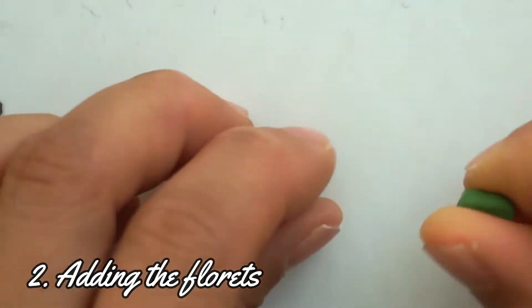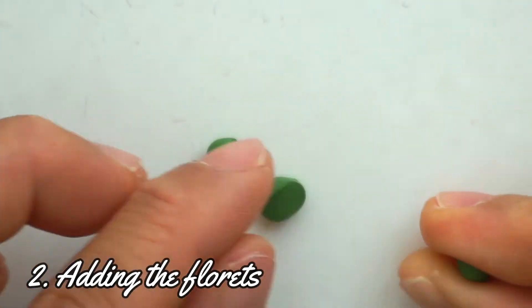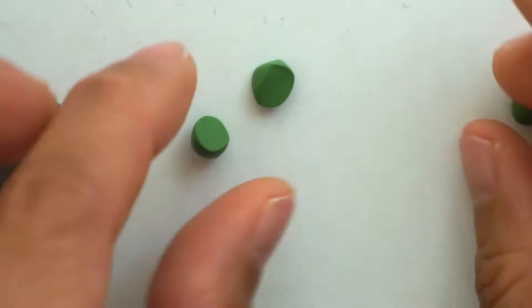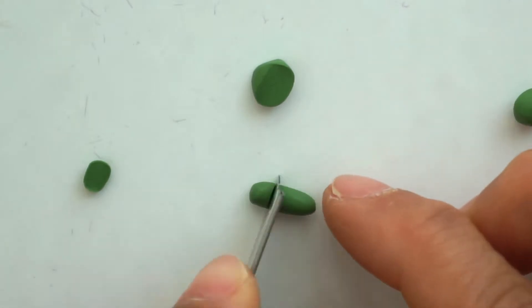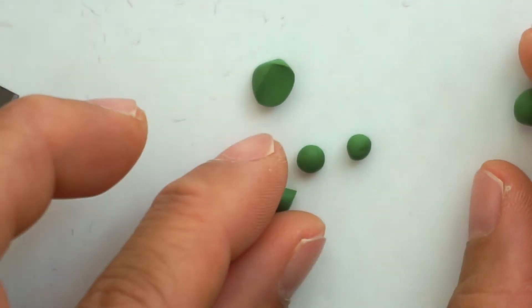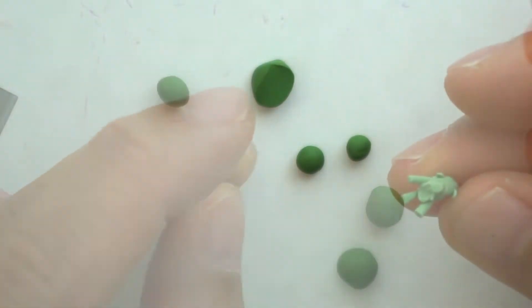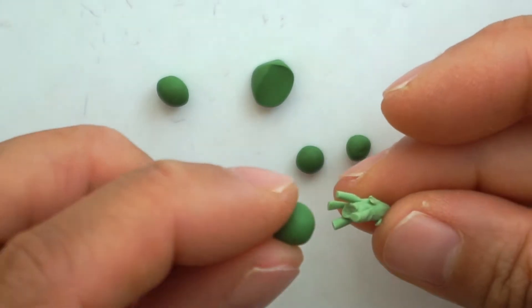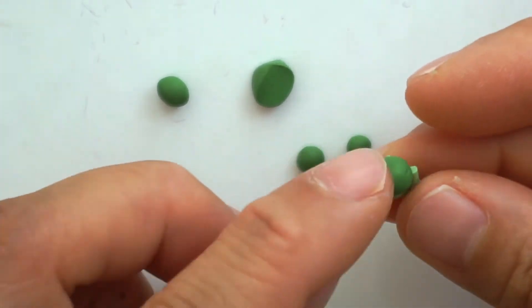Now let's add the florets. Roll the dark green clay into balls in several sizes. Before you add the florets, fill the hole of your stock with the light green clay.